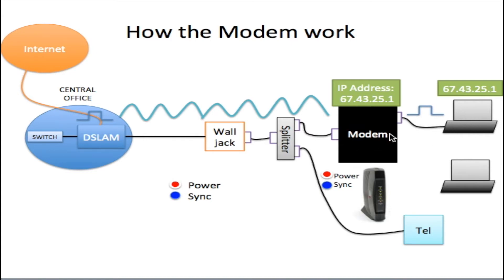Once the modem is powering up, you're going to get a flashing synchronization light on the modem. This light could be many different colors depending on the manufacturer — a flashing blue, orange, or green light. This may flash for about a minute before it goes solid. When this light goes solid, it means that the DSLAM and the modem are synchronized and communicating. At that point, the analog information is changed to digital and sent off to your computer.